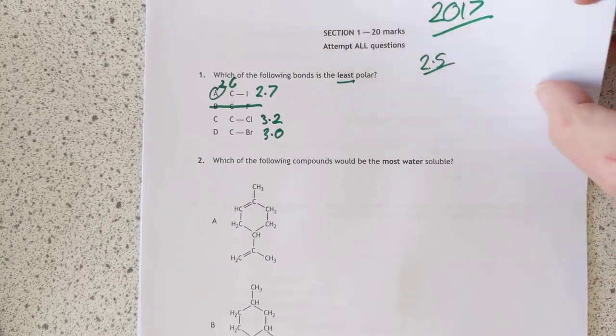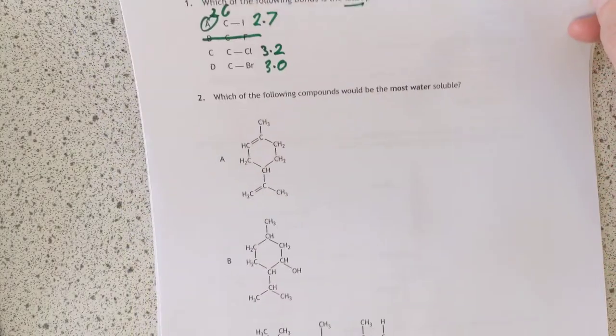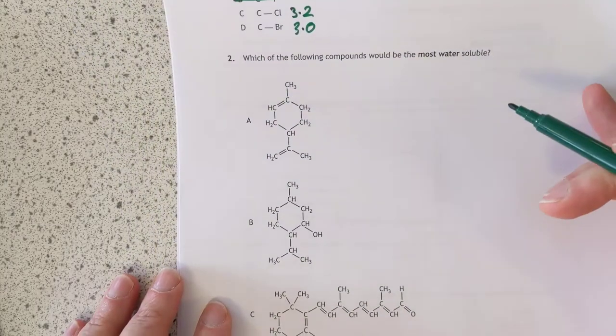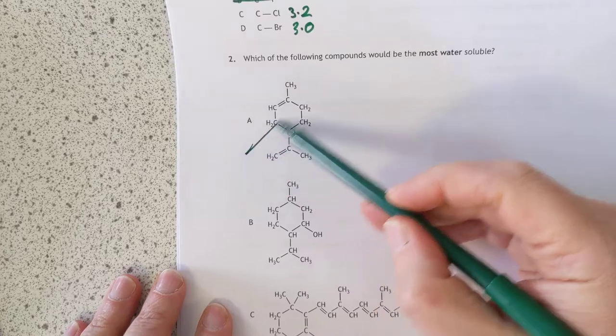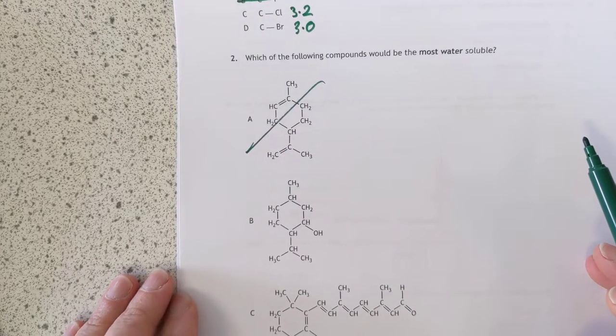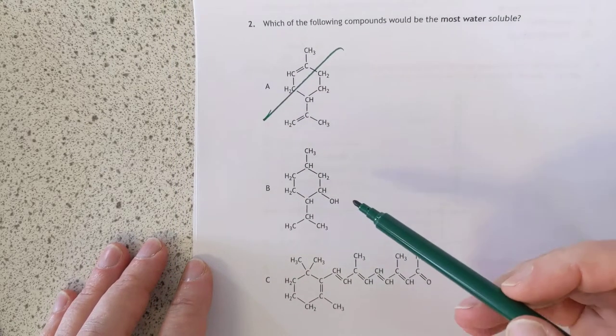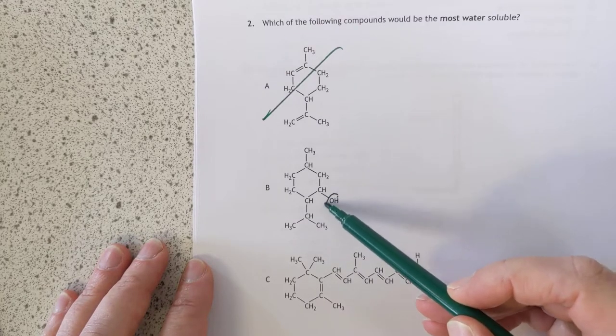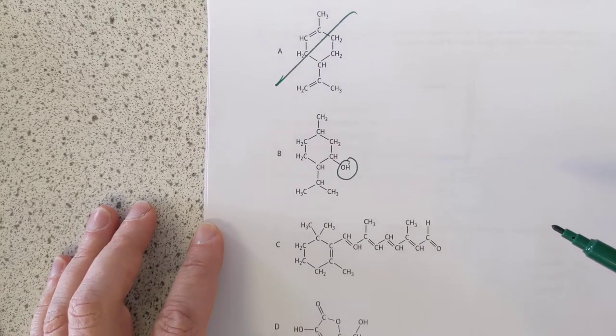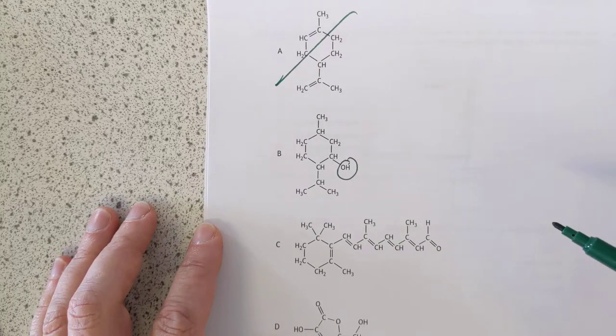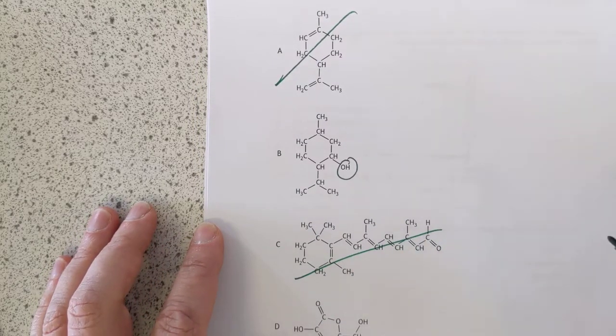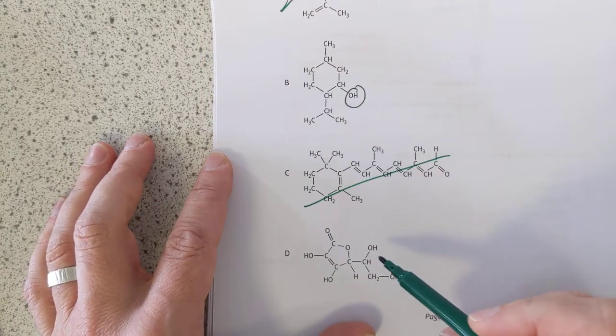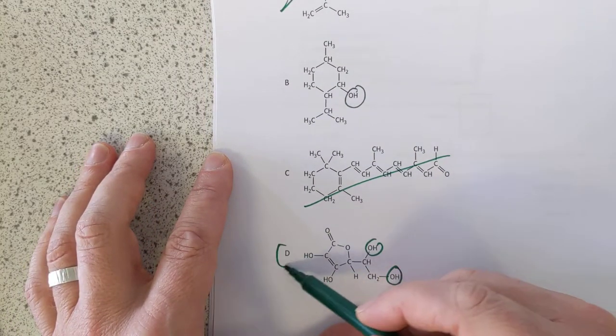Which of the following compounds would be the most water-soluble? So we're looking for ones that are most polar or contain the most OH groups. We can scratch that one. There's nothing in that one that would help with dissolving water. This one here, I'm seeing an OH group. One. That's not bad. That's the best we've got so far. Nothing in that one either. And then we get to this one, which I find has multiple OH groups. The answer is going to be D.